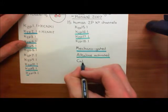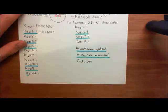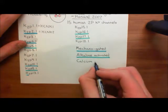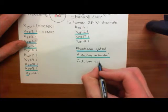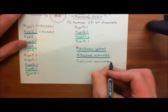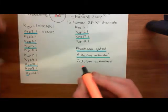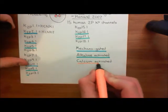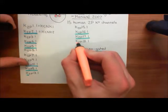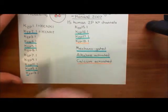Let's continue discussing the different stimuli which can activate these subunits of two pore-domain potassium channels. There are also those two pore-domain potassium channel subunits which are activated by calcium, and there's only one that's activated by intracellular calcium. This is K2P18.1, or KCNK18, which we'll see another name for in a moment.